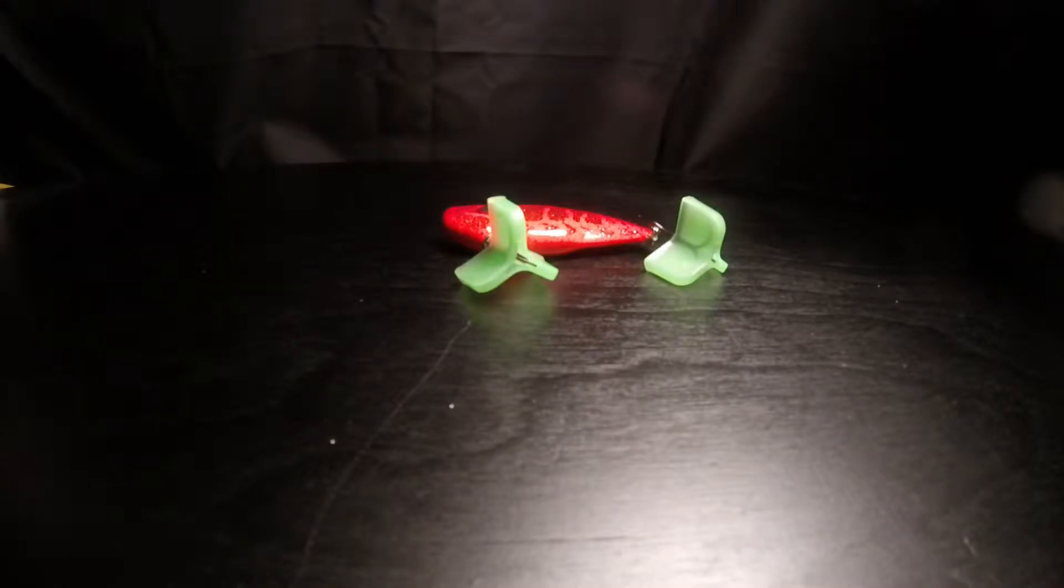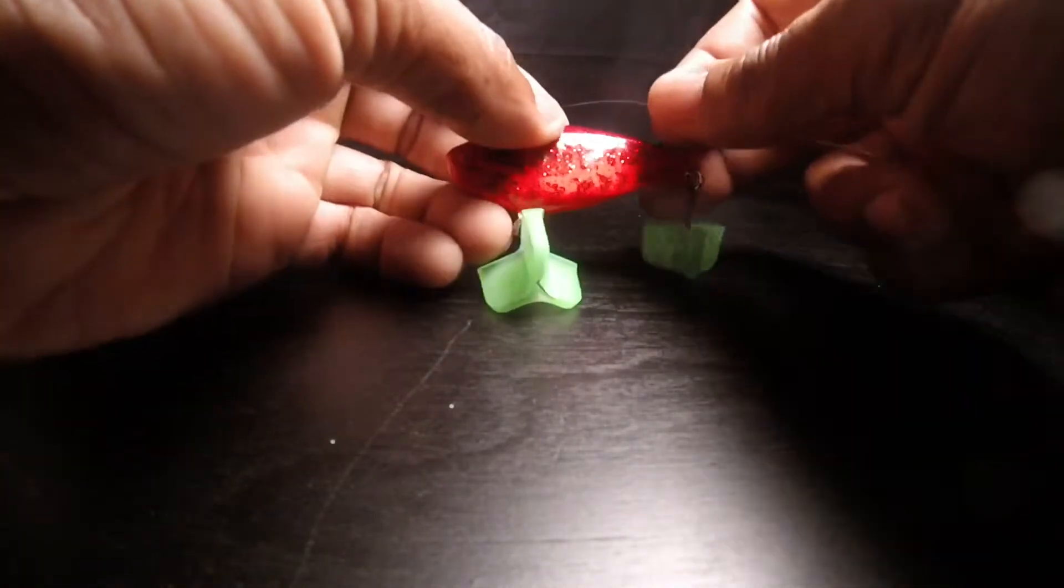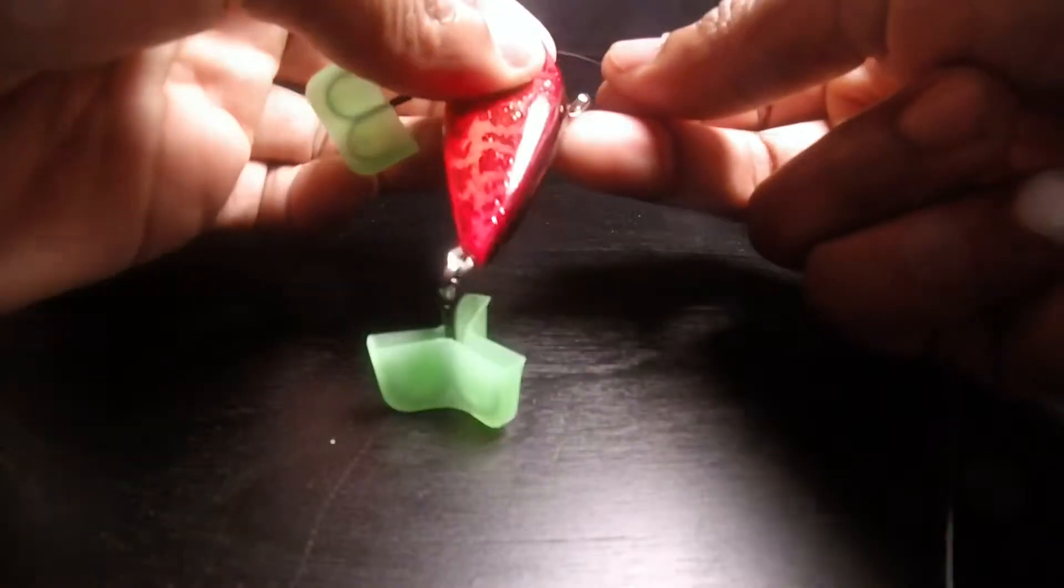Hey guys, welcome back to another episode of East Coast Bass Fishing. What I want to show you today is a knot that I use all the time. This is called the Clench Knot.